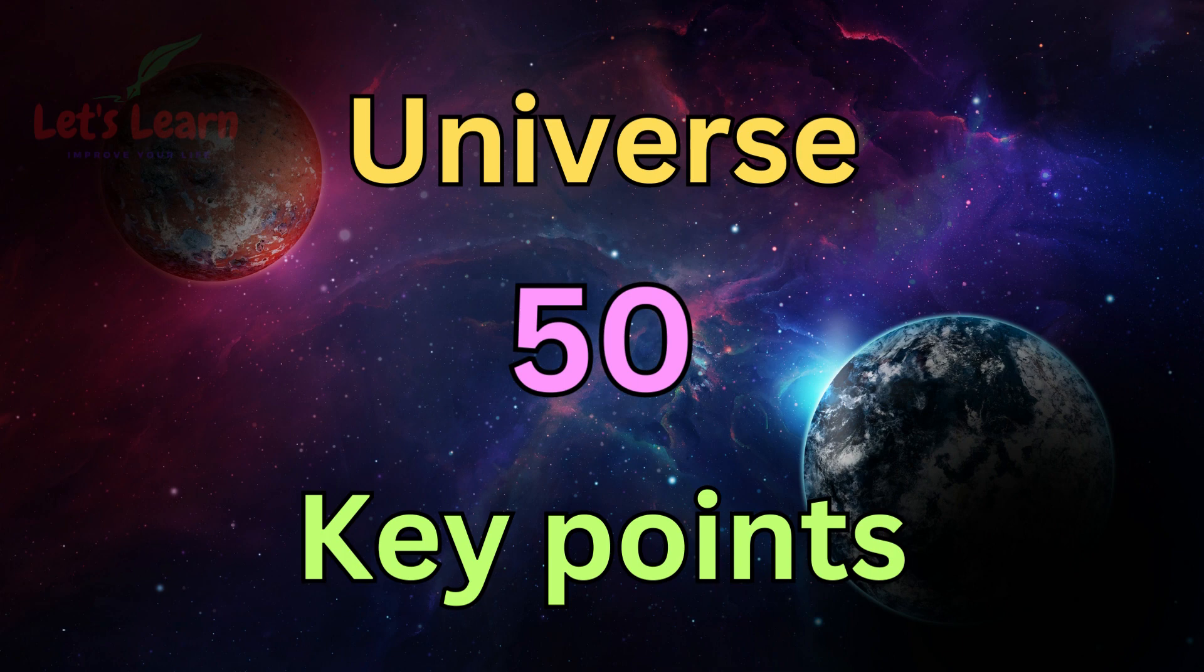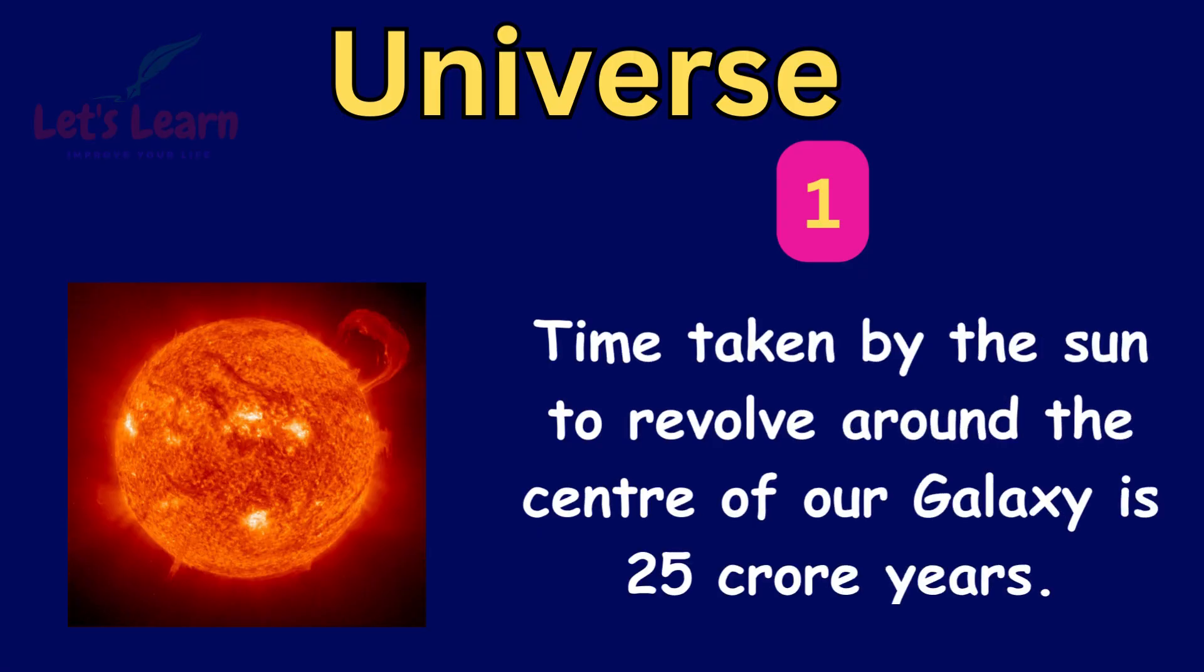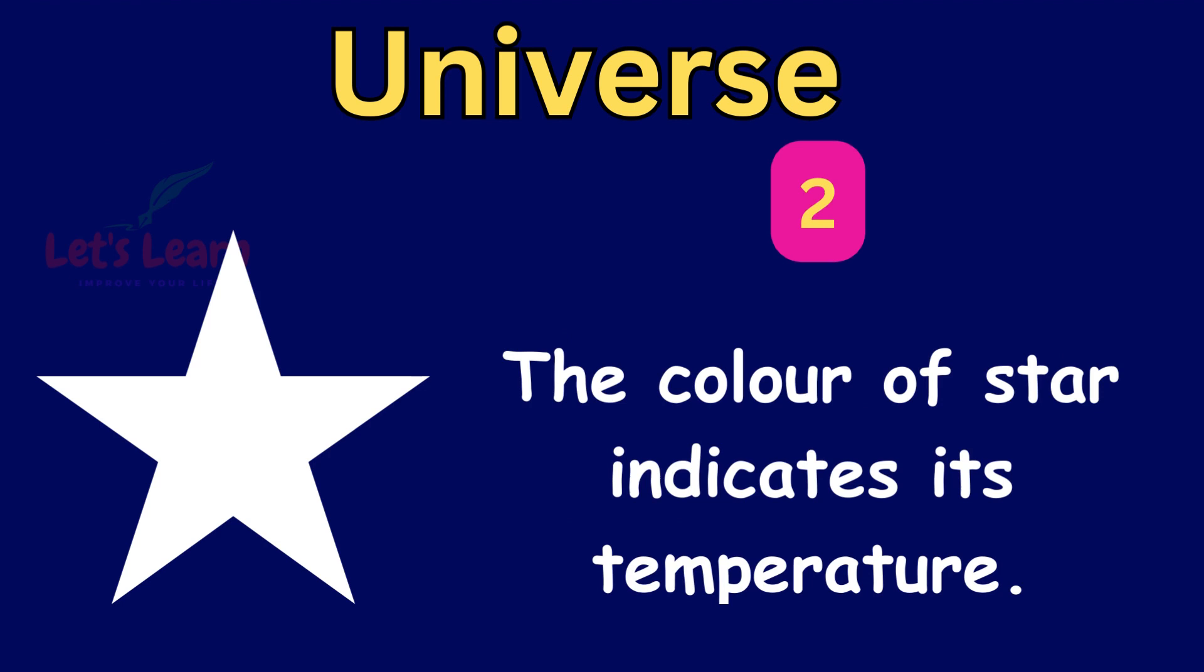Let's start. Time taken by the sun to revolve around the centre of our galaxy is 25 crore years. The colour of a star indicates its temperature.